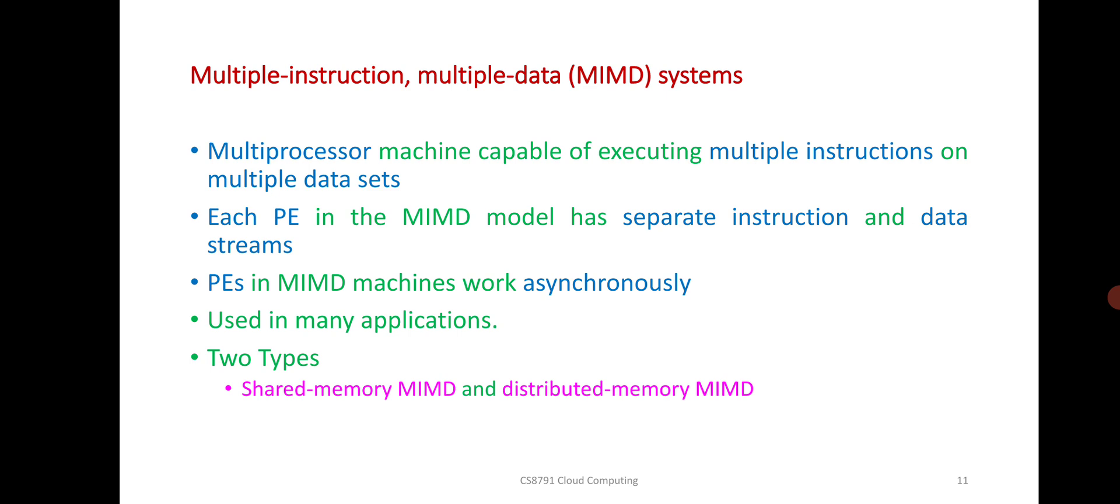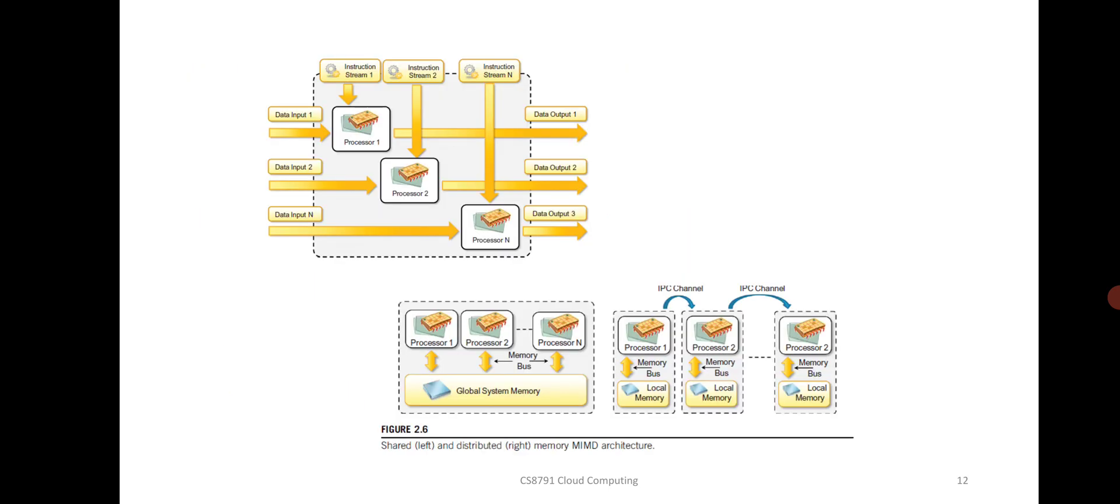MIMD is a multiprocessor machine capable of executing multiple instructions on multiple data sets. Each element in the MIMD model has separate instruction and separate data streams. You can see the shared memory of multiple instruction multiple data architecture.